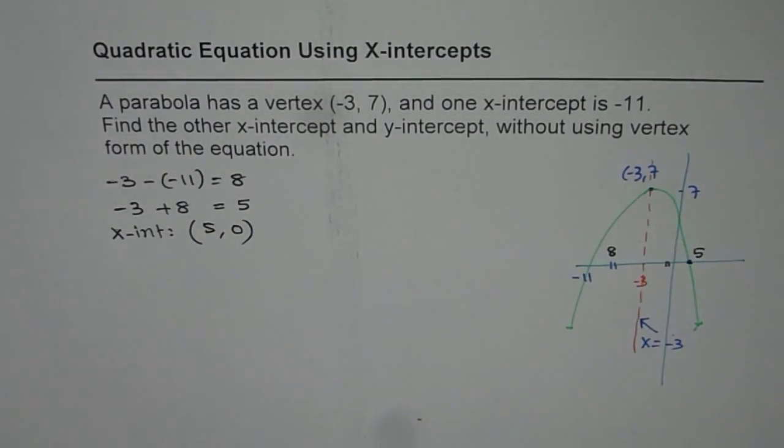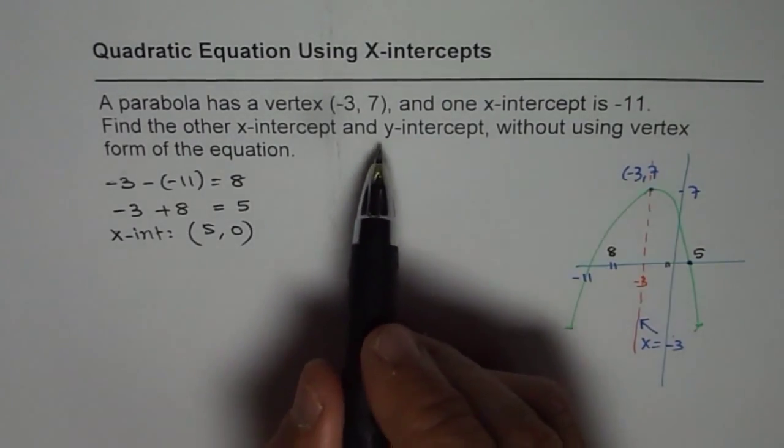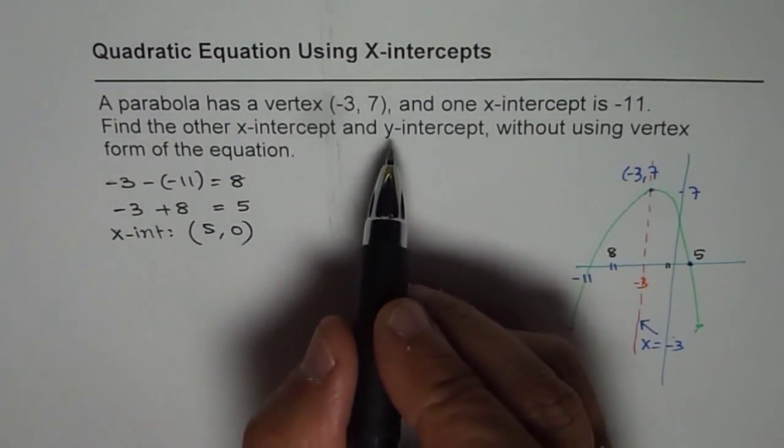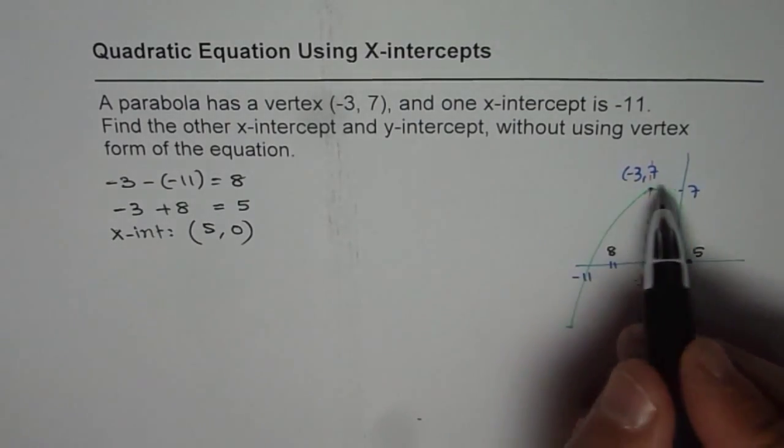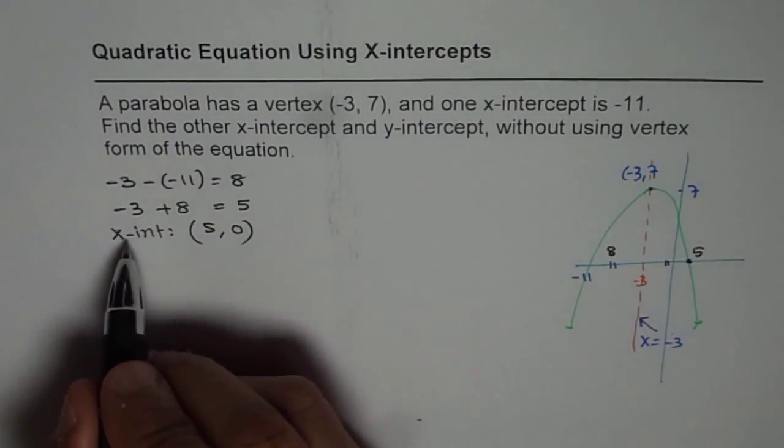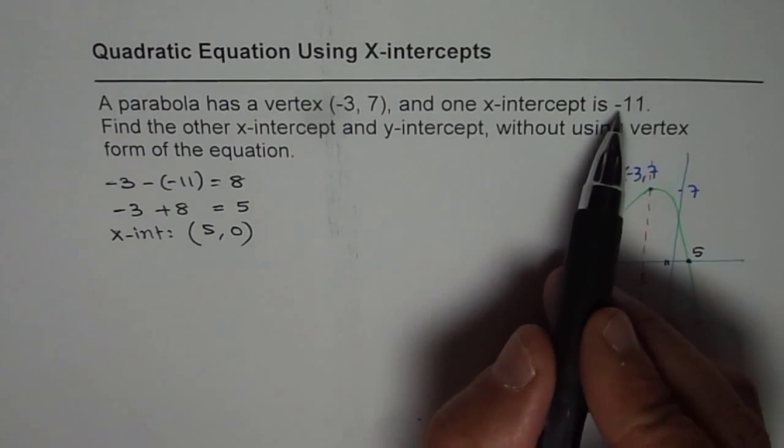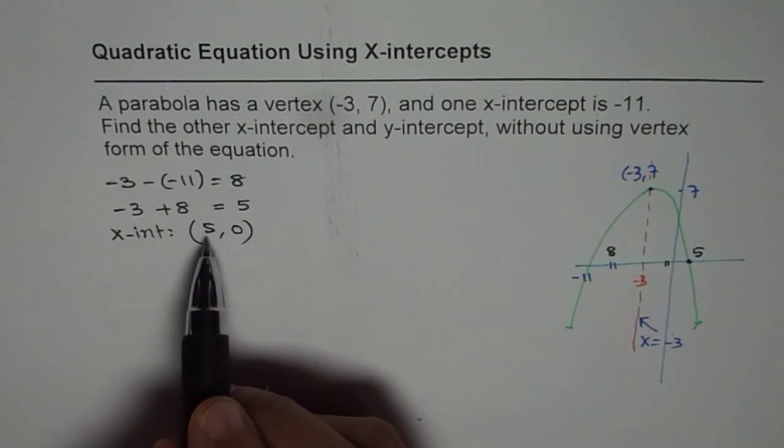So that is how you can find the x-intercept. Now the question is, how to find y-intercept? To find y-intercept, we really need to find the equation of the parabola. We know 2 x-intercepts. One is at -11, the other one is at now 5, okay?